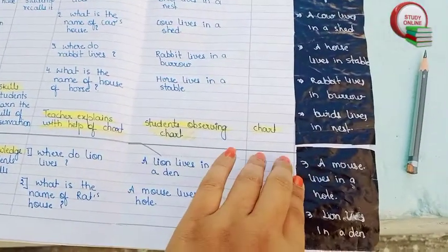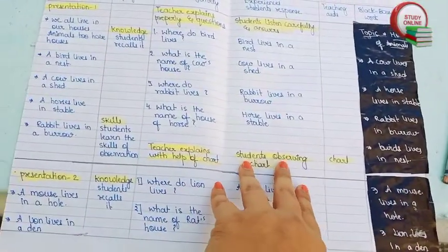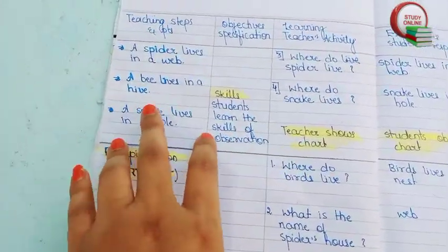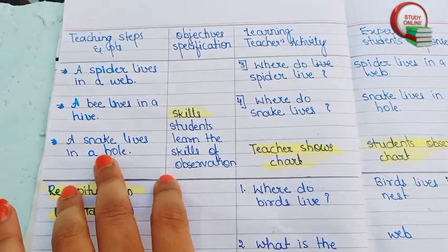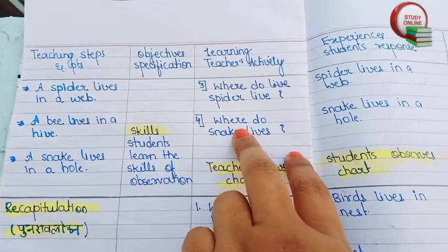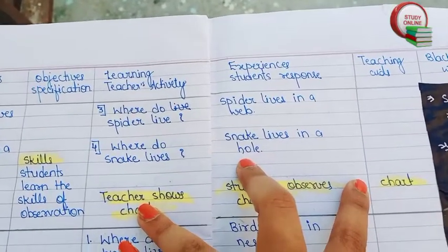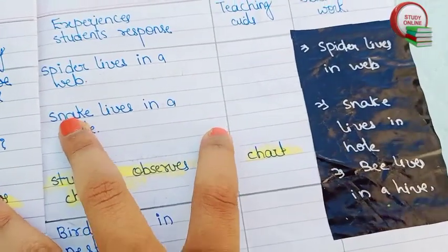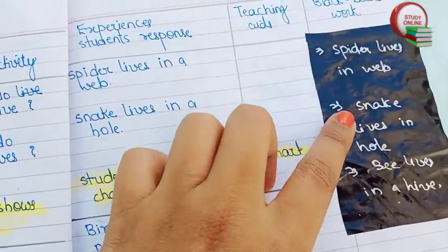This is the overall look of our lesson plan. Here you can see the rest of Presentation Two — how we have to explain everything properly in front of students. Questions three and four are listed here with the expected answers. Blackboard work is also mentioned in the lesson plan — all those things have to be noted.